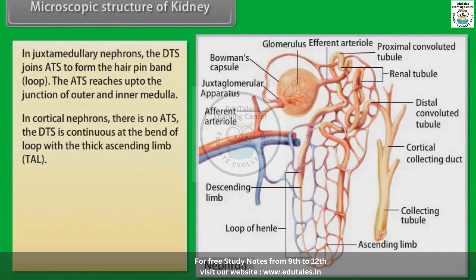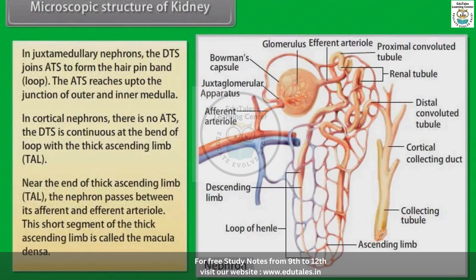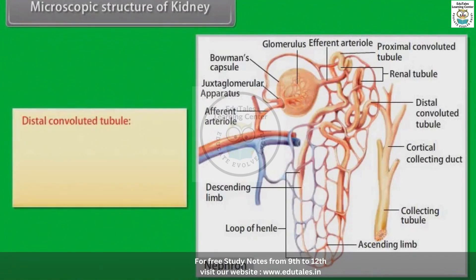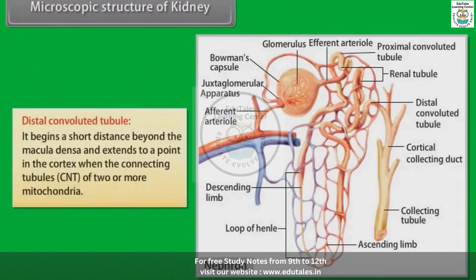The DTS is continuous at the bend of the loop with the thick ascending limb. Near the end of the thick ascending limb, the nephron passes between its afferent and efferent arterioles. This short segment of the thick ascending limb is called the macula densa. The distal convoluted tubule begins a short distance beyond the macula densa and extends to a point in the cortex where the connecting tubules of two or more nephrons join.